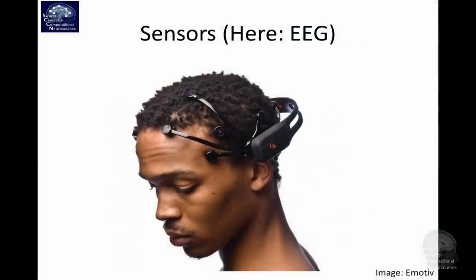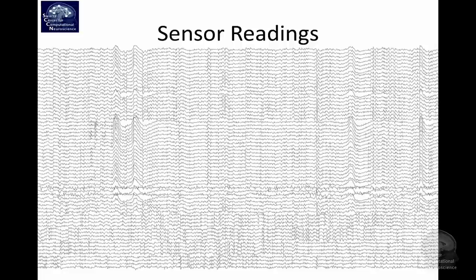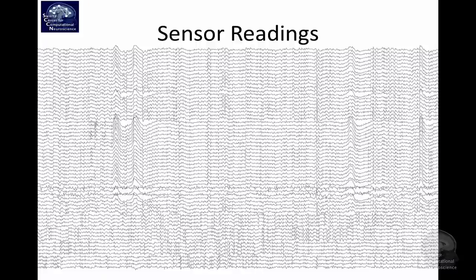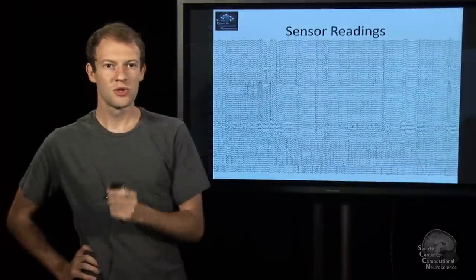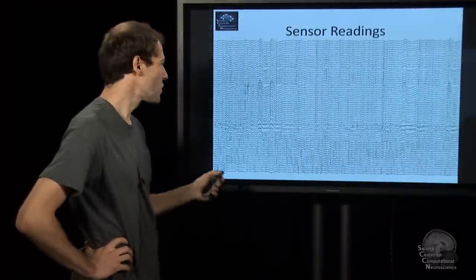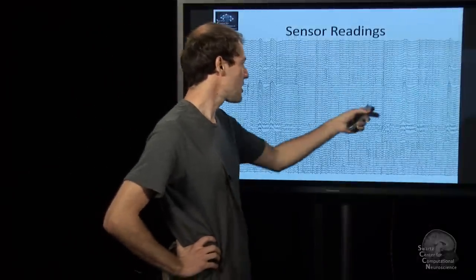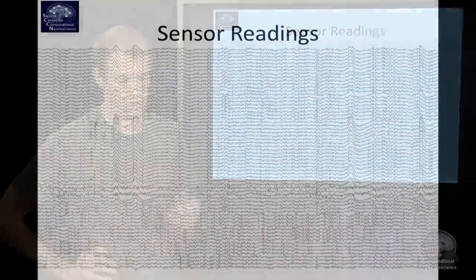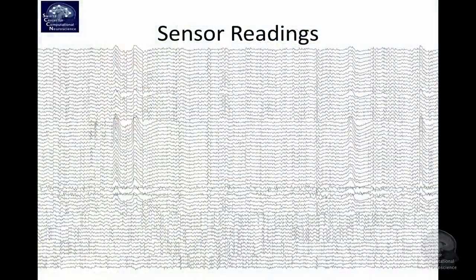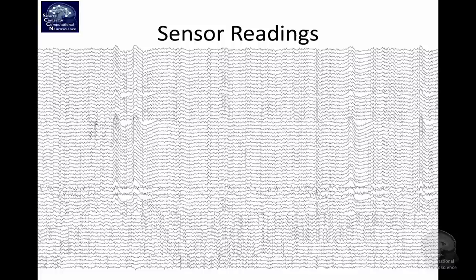And these sensors produce readings which look somewhat like these traces here. This is 10 seconds of EEG over multiple electrodes, multiple sensors, where a person is trying to imagine to speak. As you see, there is basically nothing in the signal that really tells you what word or how the person is thinking at any given time. So it's really hard to analyze the data and convert it into a series of letters. But that's basically the job of a brain-computer interface.